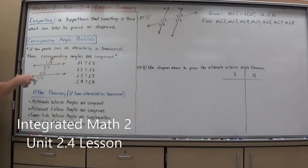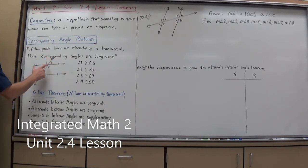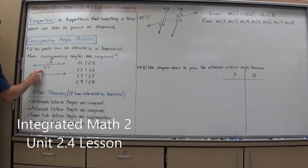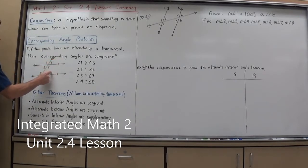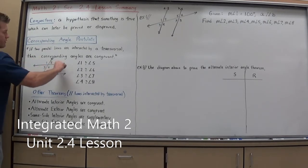A corresponding angle is a set of angles that are basically in the same position — they're in corresponding positions. For example, angle 1 is the top left angle at the upper parallel line, and angle 5 is the top left angle at the lower parallel line, so 1 and 5 are corresponding angles. Similarly, 2 and 6 are top right corresponding angles, 4 and 8 are bottom right corresponding angles, and 3 and 7 are bottom left corresponding angles.